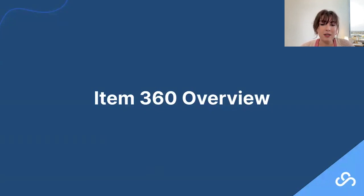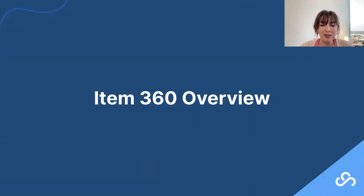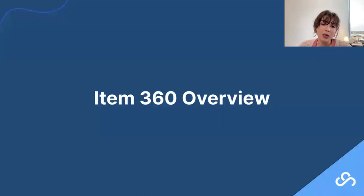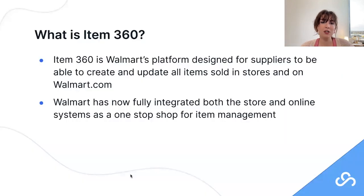Now let's get into Item 360. A quick disclaimer: at Supply Pike we have solutions for helping with revenue loss, but when it comes to item management specifically, that is outside our wheelhouse. However, we do touch areas where incorrect item setup or lack of maintenance can turn into a revenue loss opportunity — whether in the form of an OTA fine, a SQEP charge, or an AP deduction. We can point you to helpful resources, including Walmart help docs or providers who can assist.